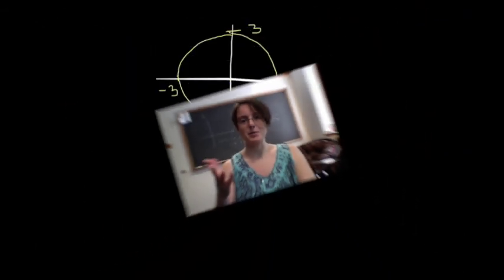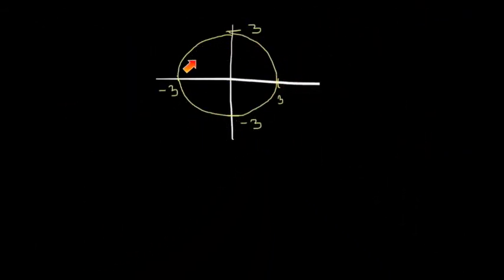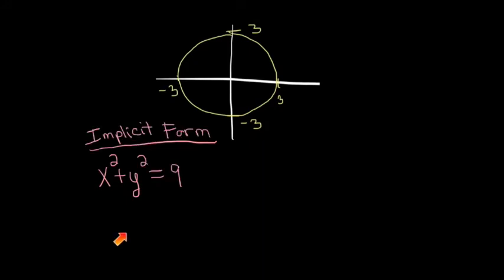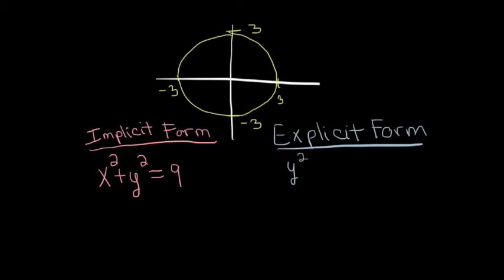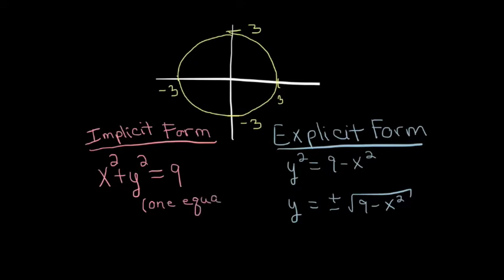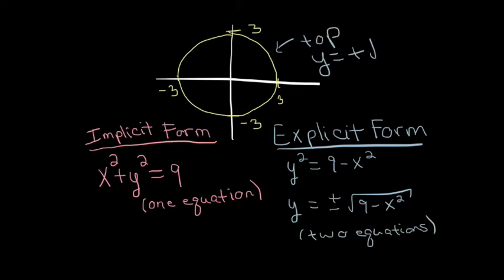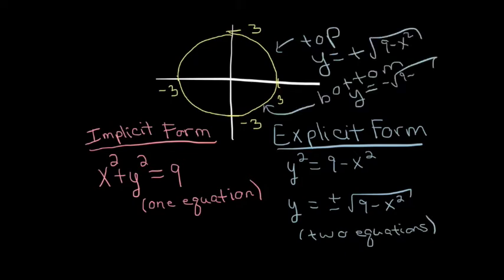Let's do a specific example. This is a circle of radius 3 centered at the origin with equation x squared plus y squared equals 9. This is the implicit form. The explicit form is obtained by solving for y in terms of x, giving two equations: the positive square root of 9 minus x squared, and the negative square root of 9 minus x squared.